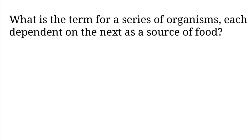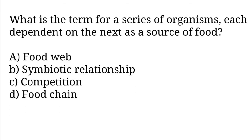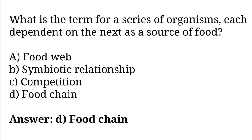What is the term for a series of organisms each dependent on the next as a source of food? Options: Food web, symbiotic relationship, competition, food chain. So the correct answer is option D. Food chain.